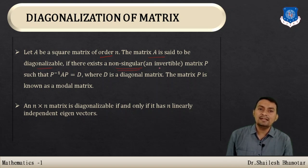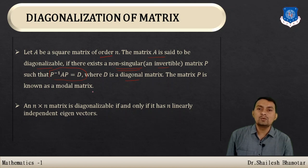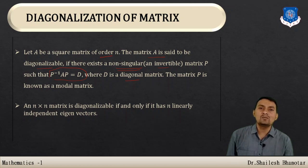If there exists a non-singular (invertible) matrix P such that P inverse AP equals D, where D is a diagonal matrix, then P is known as the modal matrix. The modal matrix P is derived using the eigenvectors — whatever eigenvectors you determine, represent them as columns and that will be your modal matrix.